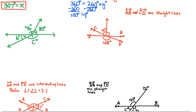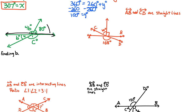Let's take a look at another example involving two variables. We need to find one variable and then use that solution to find the other. Let's start by finding b. We see that this is a straight line, and we know that a straight line with two angles means they are supplementary — supplementary angles add up to 180 degrees. So 4b plus 80 equals 180 degrees.